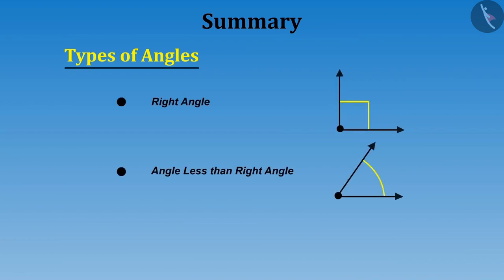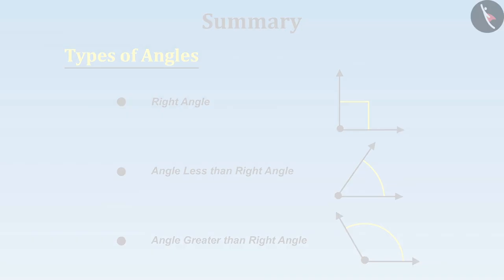Let us go home. In this video, we have learnt about three types of angles. Right angle, angle less than right angle and angle greater than right angle. Do you want to identify more angles in other objects? Then you need to watch the next video.